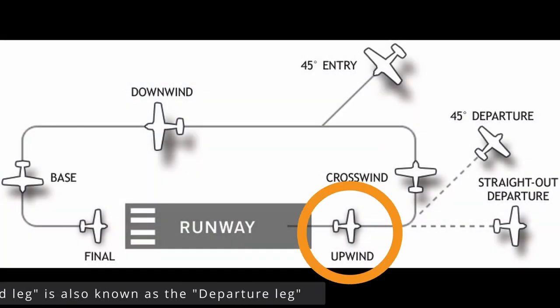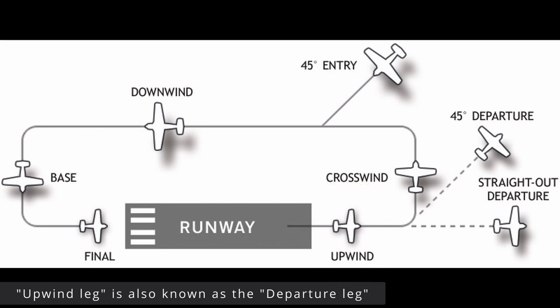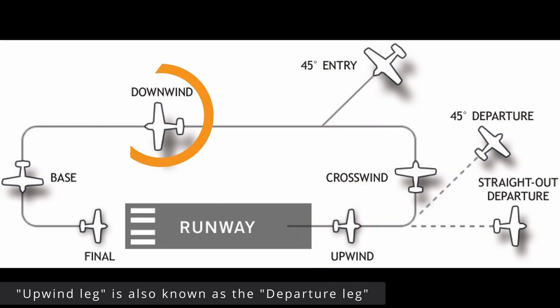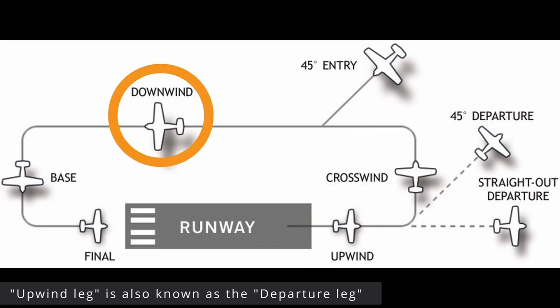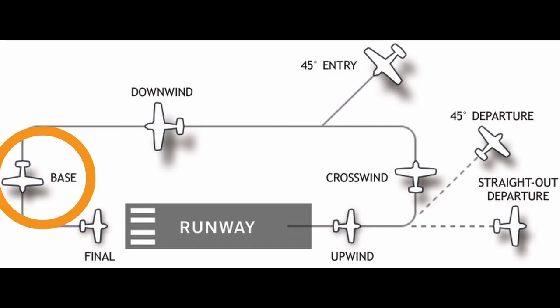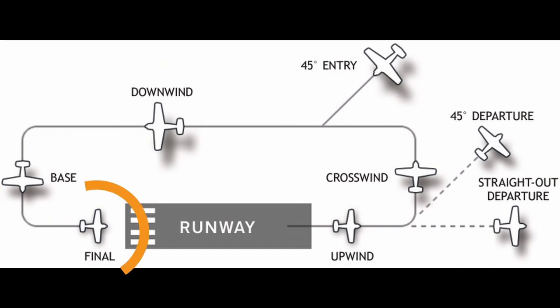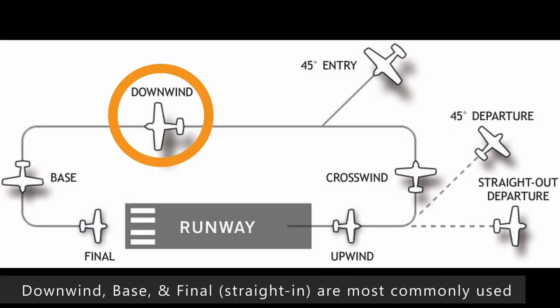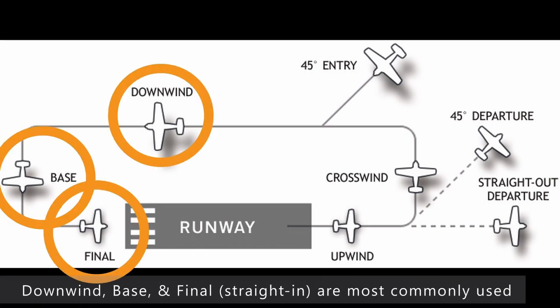Straight off the runway is known as the upwind leg. Then comes the crosswind leg, followed by the downwind leg which parallels the runway in the opposite direction. Next you have the base leg, and lastly the final leg. When you're inbound to a towered airport, the most frequent pattern entry points are the downwind leg, the base leg, and the final leg.